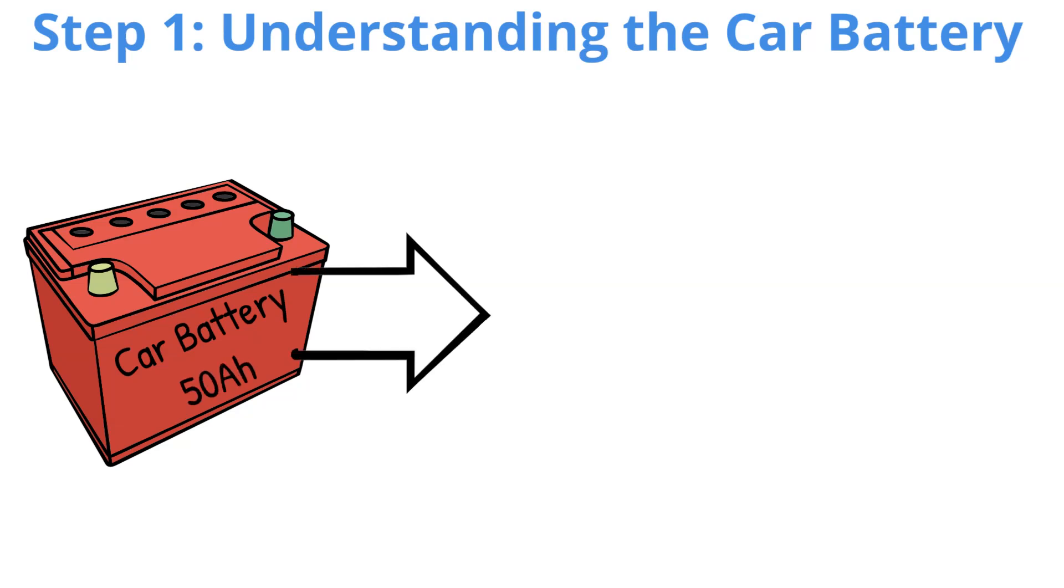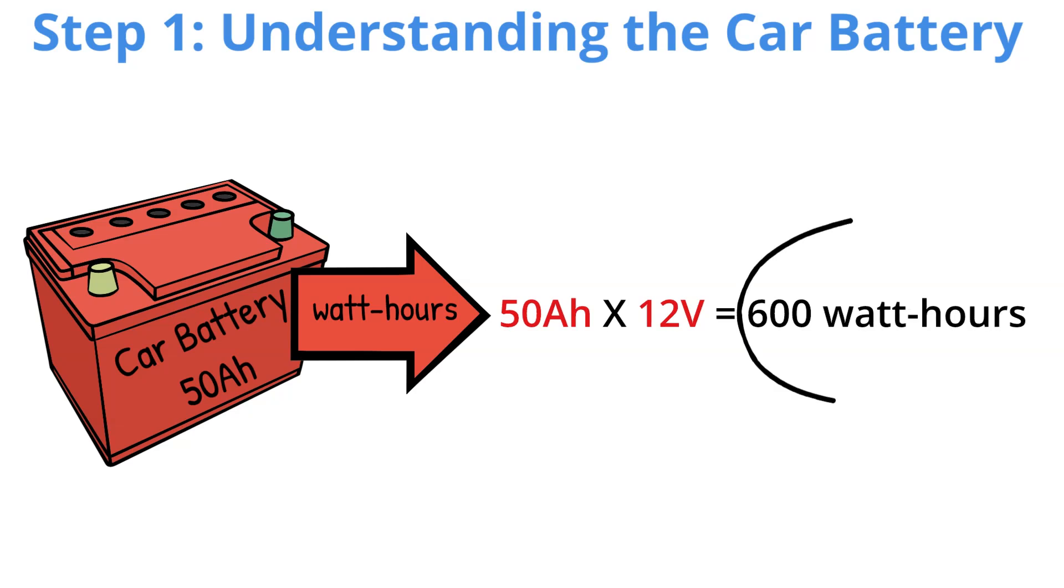To figure out how much energy this battery can store, we convert amp hours into watt hours by multiplying the amp hours by the voltage. This means our car battery can theoretically supply 600 watt hours of energy.